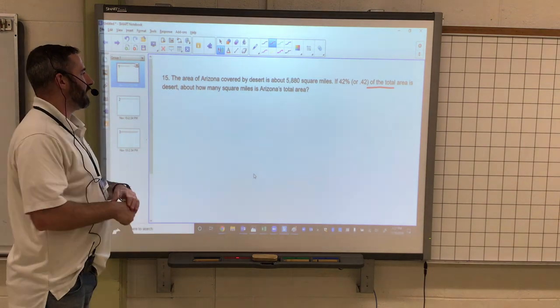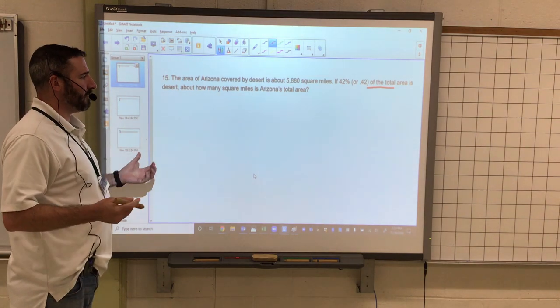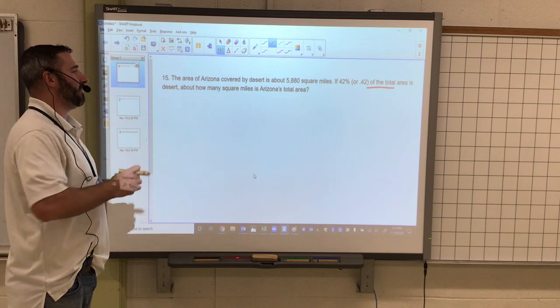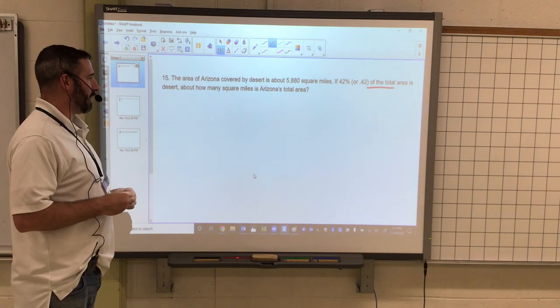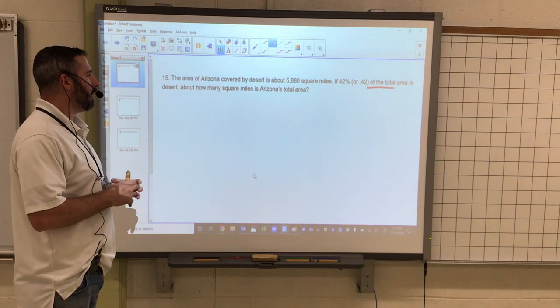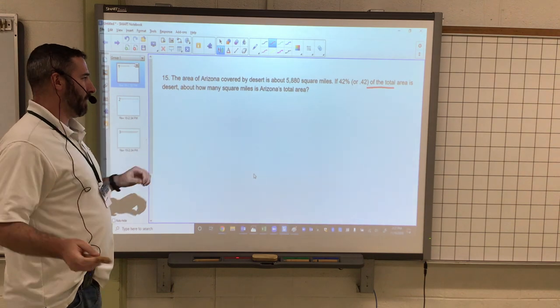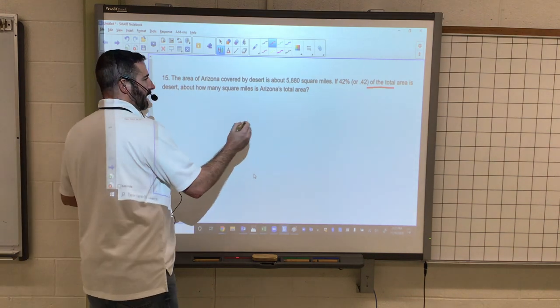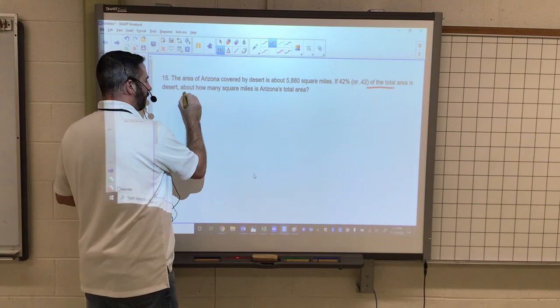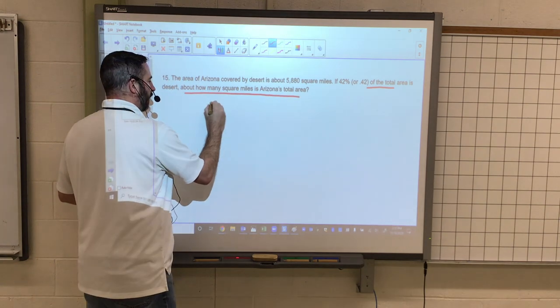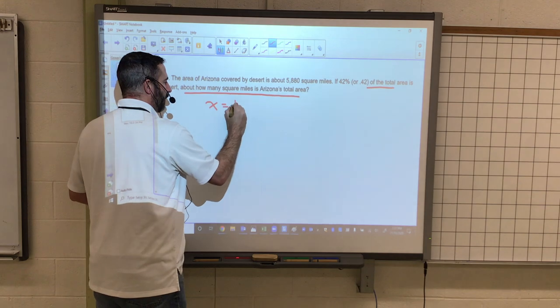We're saying the area of Arizona covered by the desert is about 5,880 square miles. So that's the area covered by the desert. How many square miles is Arizona's total area? We don't know what the total area is, so X is going to equal total area.